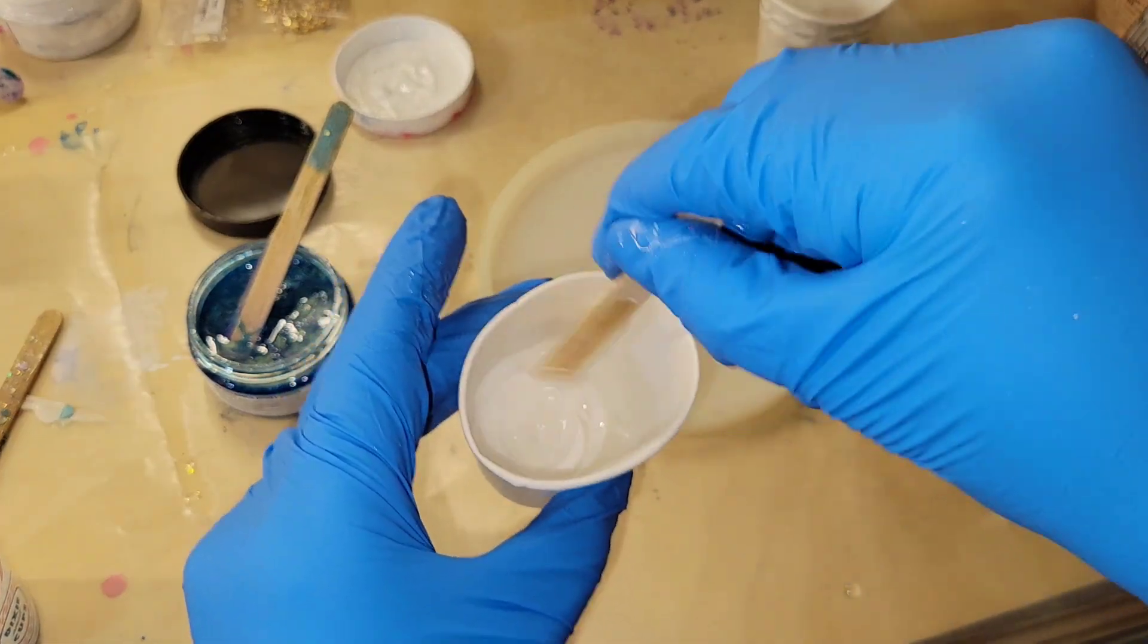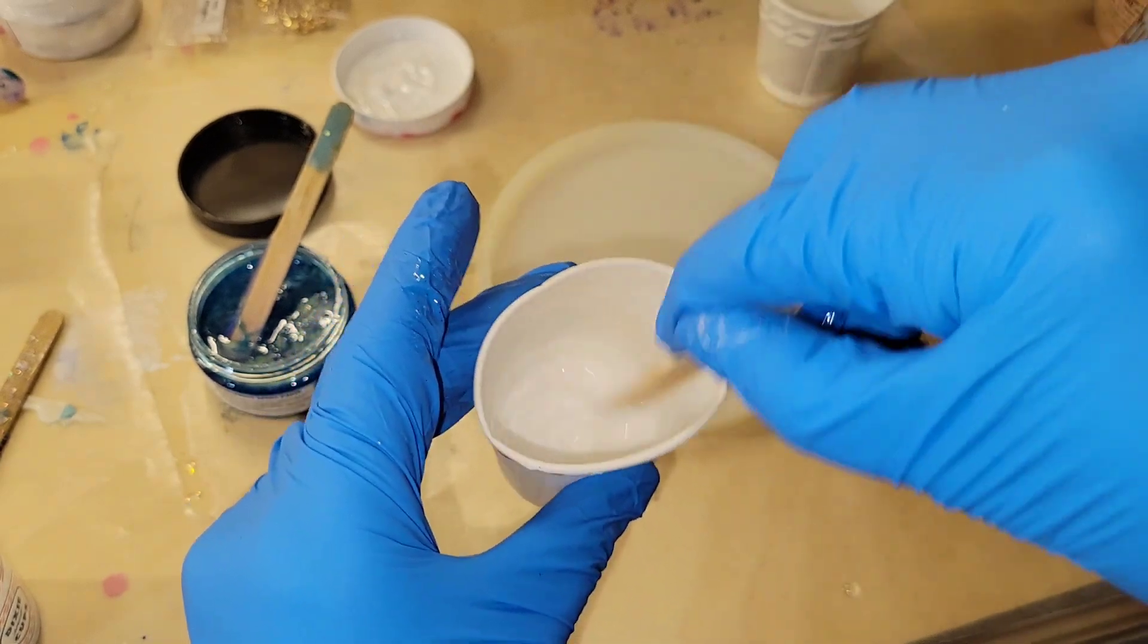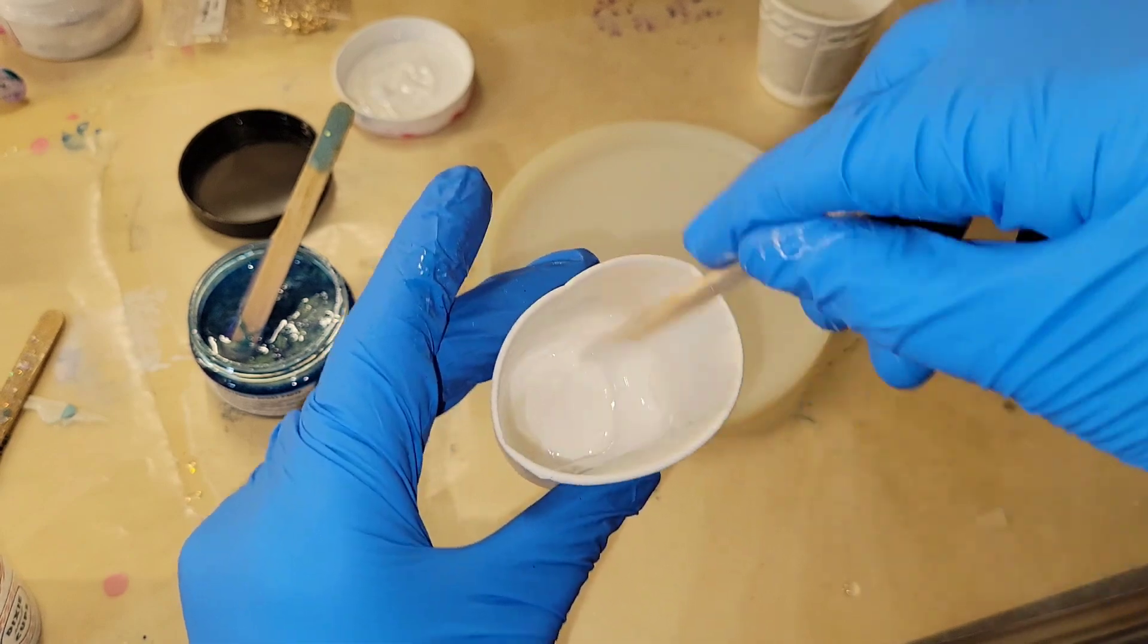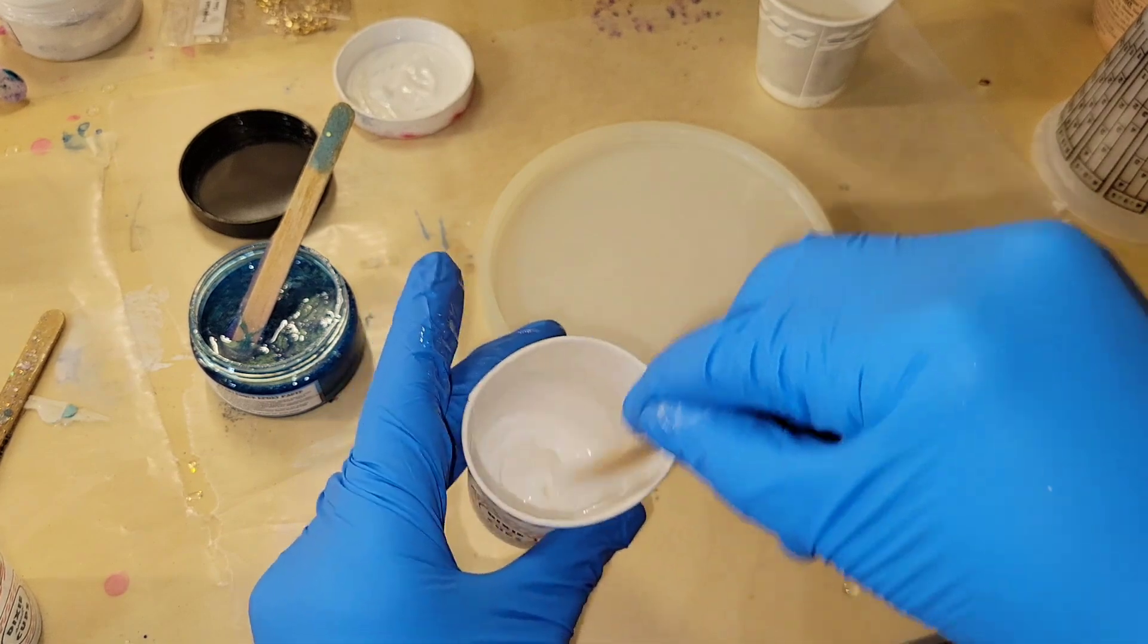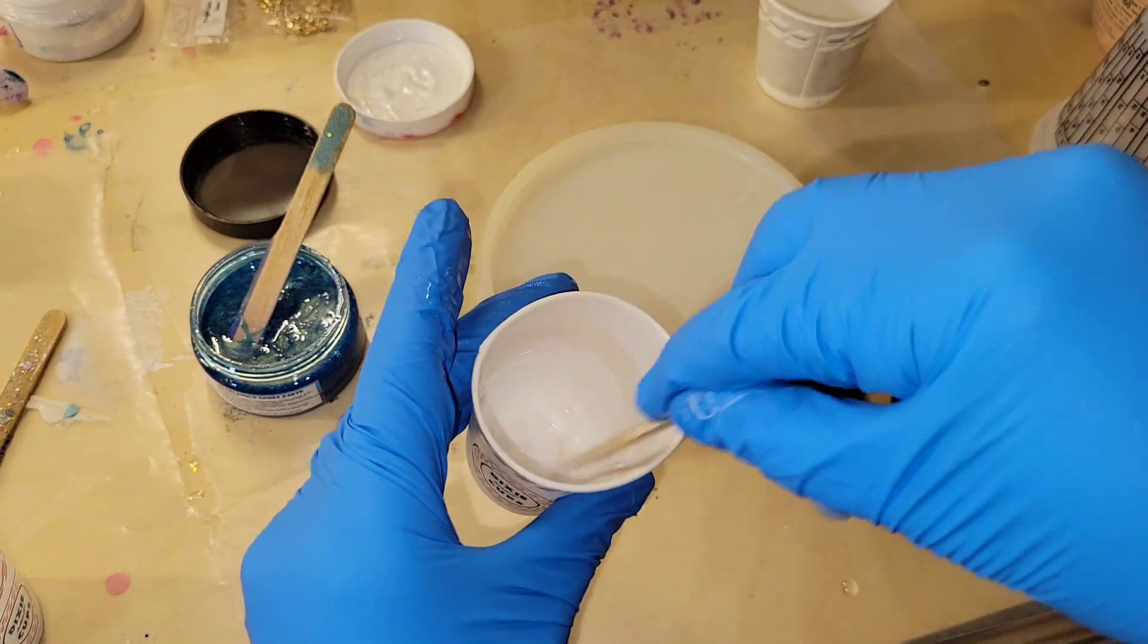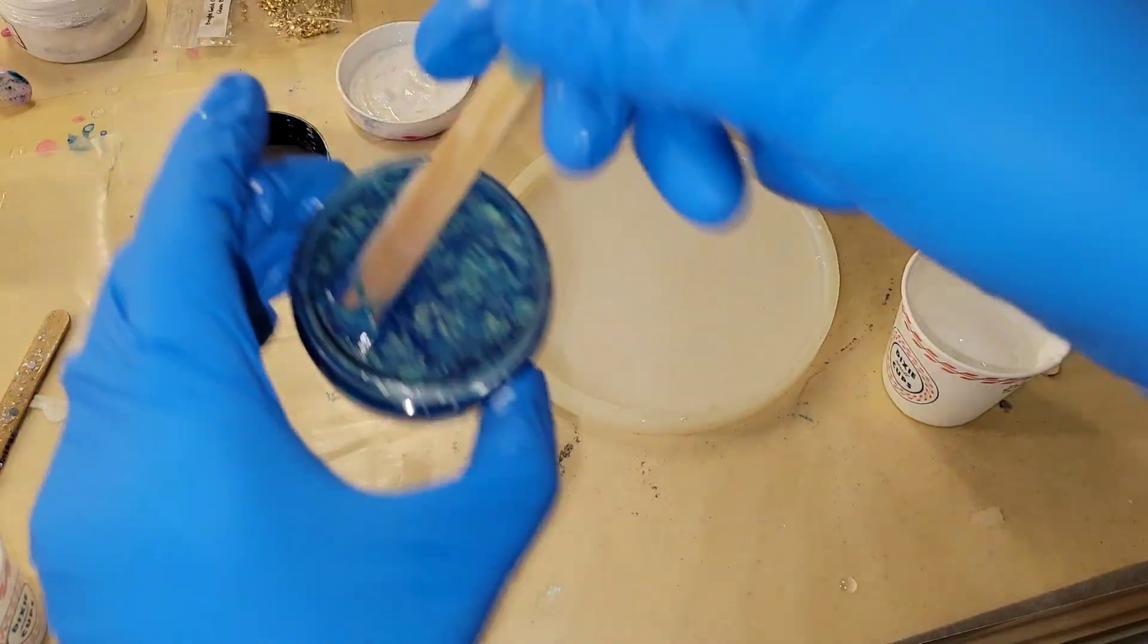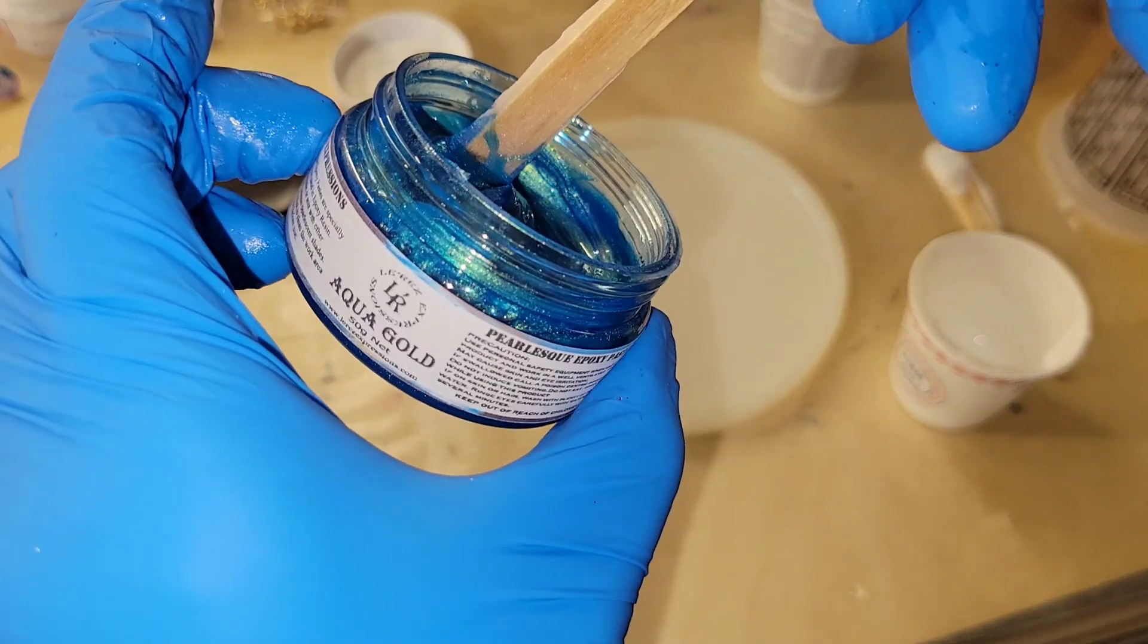In this cup, I have about half an ounce of clear resin, and I'm adding some Angel White epoxy paste. What I do is take my stir stick, stir up the product inside the container, then scrape the excess off. I only use the tiny bit that's left over on my stir stick. I don't use much pigment at all for the white.